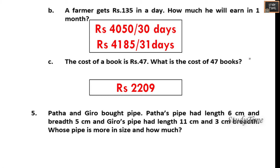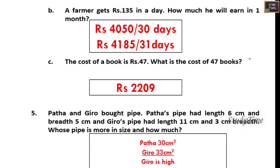Pata and Giro bought pipe — the measurement is given. Whose pipe is more in size and how much? You have to multiply and find out which is higher. Here Giro is higher because it is 33 centimeter square.